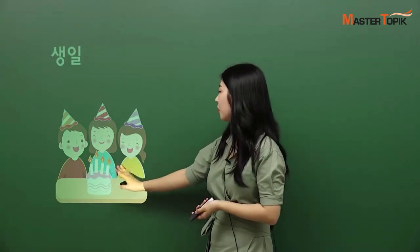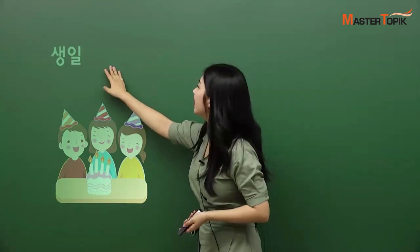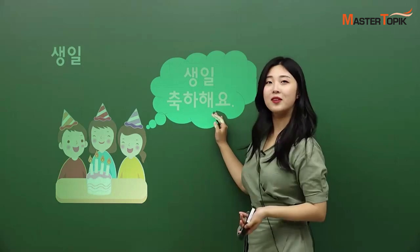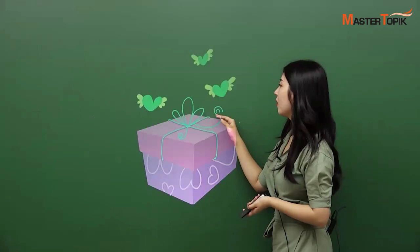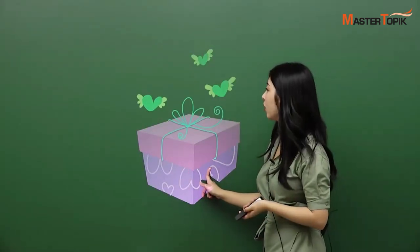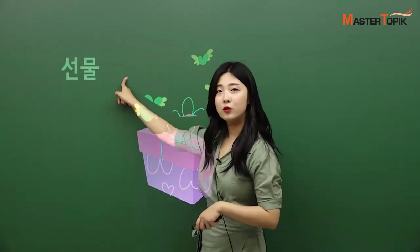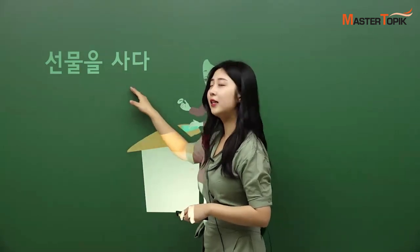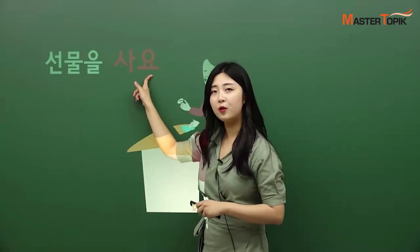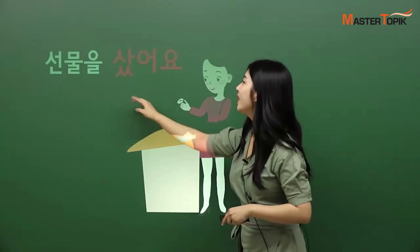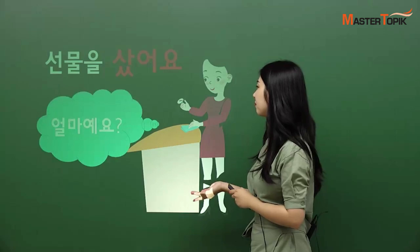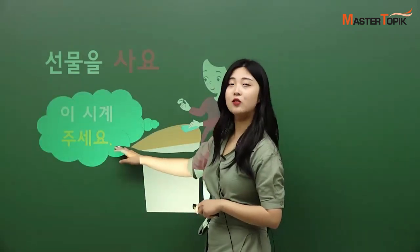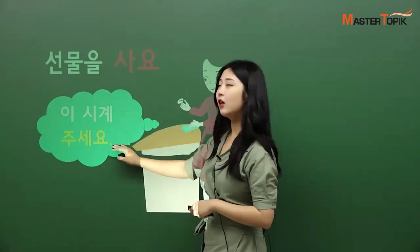Guess the day — what day is it? We have a birthday cake here. It is 생일 — birthday. What should we do? 생일 축하해요 — happy birthday. And to go to the party, we have to prepare a 선물 — present/gift. So, we have to buy it: 선물을 사다 → 선물을 사요 → 선물을 샀어요 — 'I bought a present.' 얼마예요? How much is it? 이 시계 주세요 — she picked a 시계.